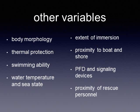Other variables that determine survival in cold water immersion include body morphology: children and tall, thin adults become hypothermic faster due to a greater body surface area to mass ratio, while people with larger BMIs last longer as fat is a good insulator. Thermal protection is also important — wearing a dry suit gives you significantly more time before hypothermia and cold incapacitation set in. Swimming ability is another factor.